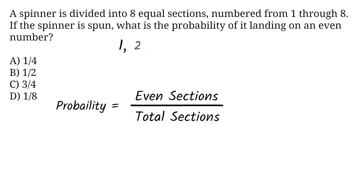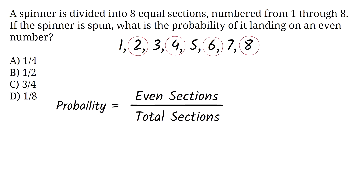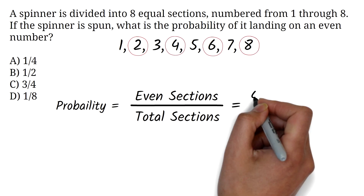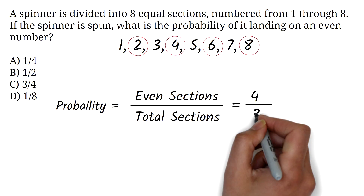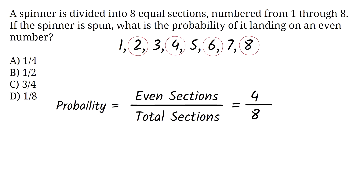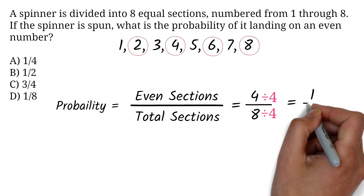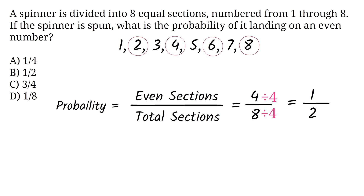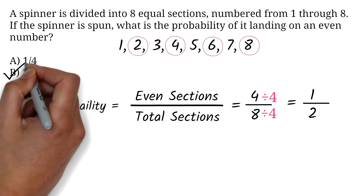The spinner has 8 sections numbered 1 to 8. Even numbers are simply multiples of 2. The even numbers between 1 and 8 are 2, 4, 6, and 8 — so there are 4 even numbers. Therefore, the probability of landing on an even number is 4 divided by 8. We simplify the fraction by dividing by 4: 4 divided by 4 is 1, and 8 divided by 4 is 2. The probability is 1 over 2. The correct answer is B, 1 over 2.